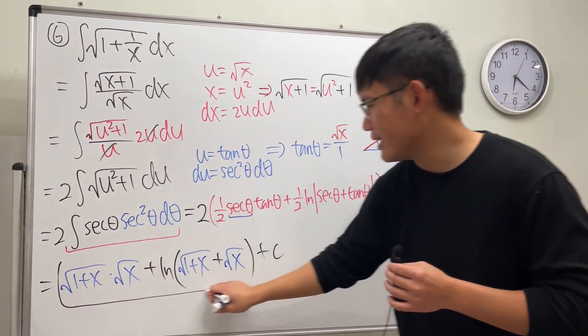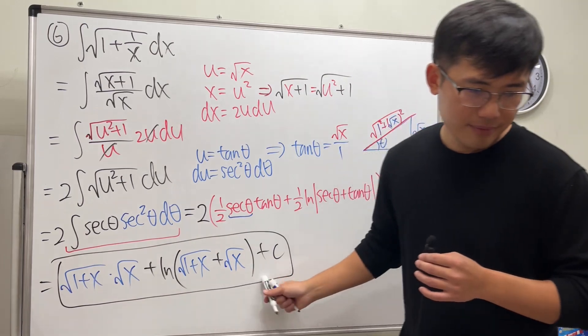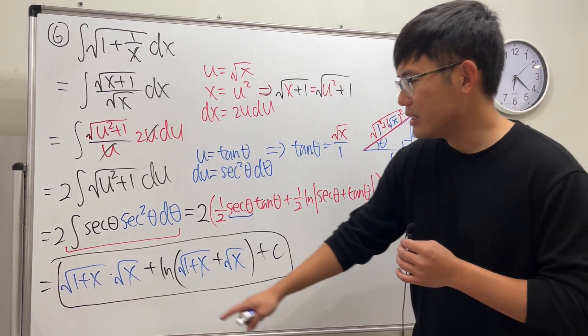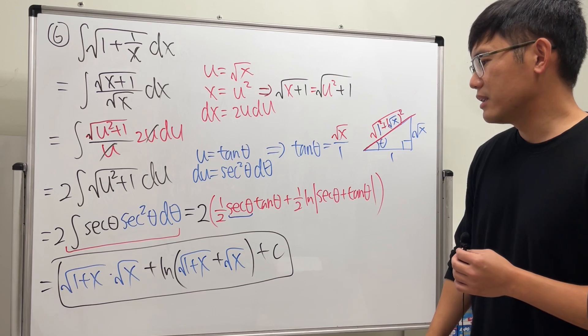So put a plus c. And of course, if you would like to multiply this in separate, then we'll just leave it like this.